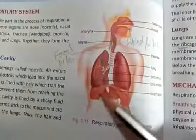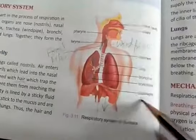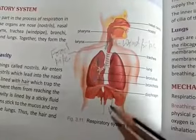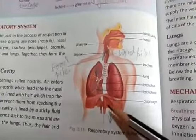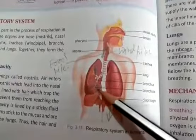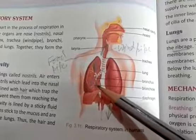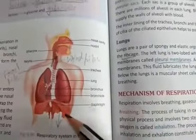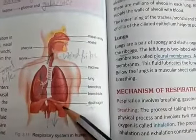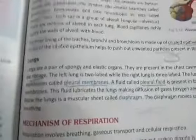Below the lungs you can see the structure called the diaphragm. This diaphragm moves upward or downward, and because of these movements the lungs sometimes contract or expand. The rest of the mechanism of respiration — how the diaphragm makes the lungs expand and contract — we will see in the next video. Till then, goodbye.